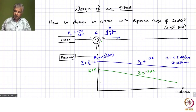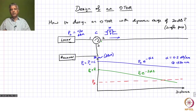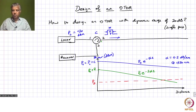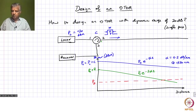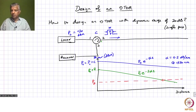Let us say the detector sensitivity is P_D — the minimum detectable power at the receiver. We can pick up power values down to that level. Beyond that distance, the signal goes into the noise and we are not able to retrieve any signal.